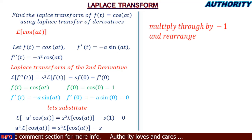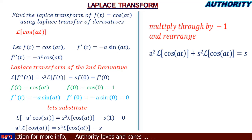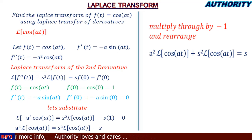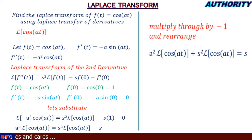We multiply through by −1 and rearrange. Moving the s²·L{cos(at)} term to the left-hand side, we get: a²·L{cos(at)} + s²·L{cos(at)} = s. We can see that the Laplace transform of cos(at) appears in both the first and second terms, with coefficients a² and s² respectively.